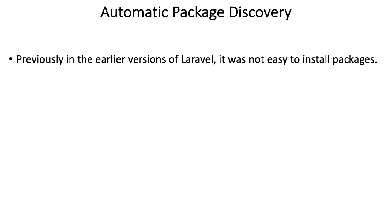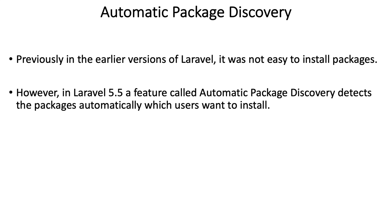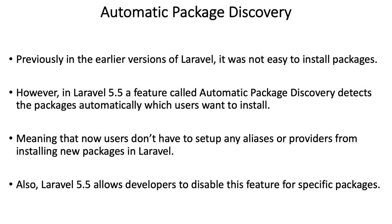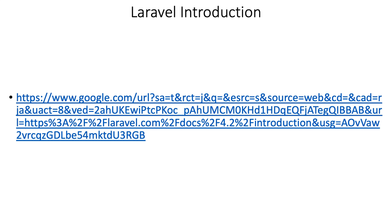Automatic package discovery — previously in early versions of Laravel it wasn't easy to install packages, but now with 5.5, automatic package discovery detects the package automatically and which user wants to install. So it knows what you've got and keeps them current. You can turn that off if you want to. Here's a link to a Laravel introduction document that goes into a whole lot more detail. I've really flown over this pretty quickly because I'm trying to expose it to you — this is all just talking about where you go after you leave this class.